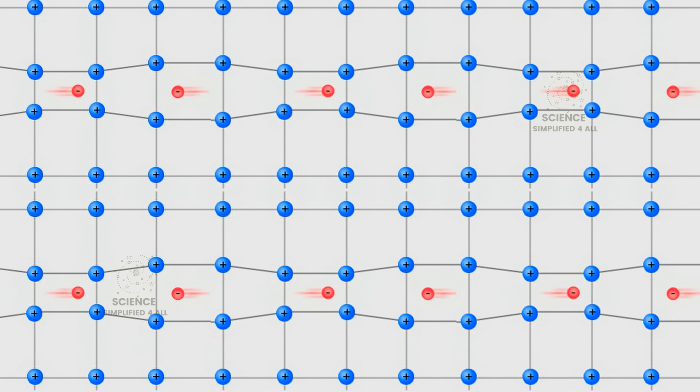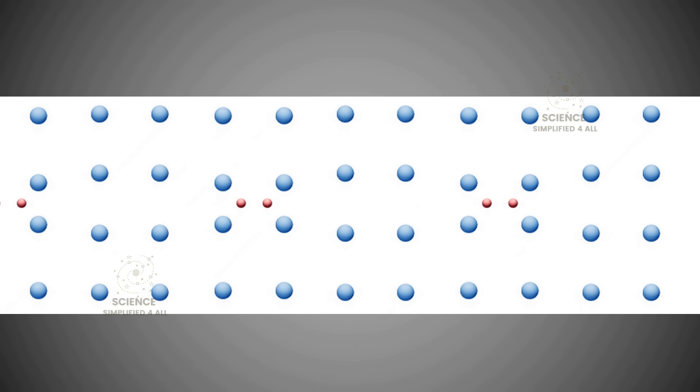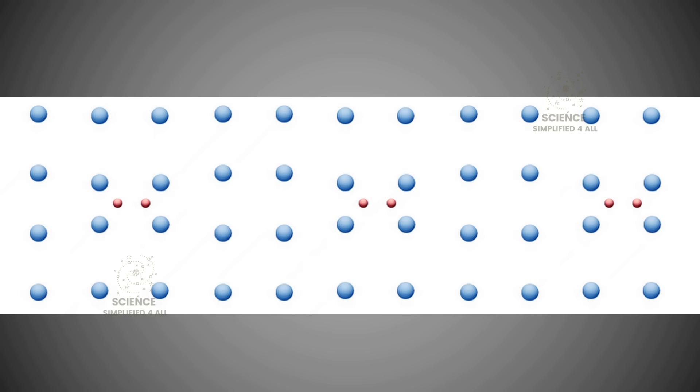Now, in certain special conductors, the crystal structure has a unique property. When such materials are cooled sufficiently, the free electrons start pairing up, forming what are known as Cooper pairs. An individual electron is a fermion, but when two electrons form a Cooper pair, their spins cancel each other out, and together they behave like a boson.